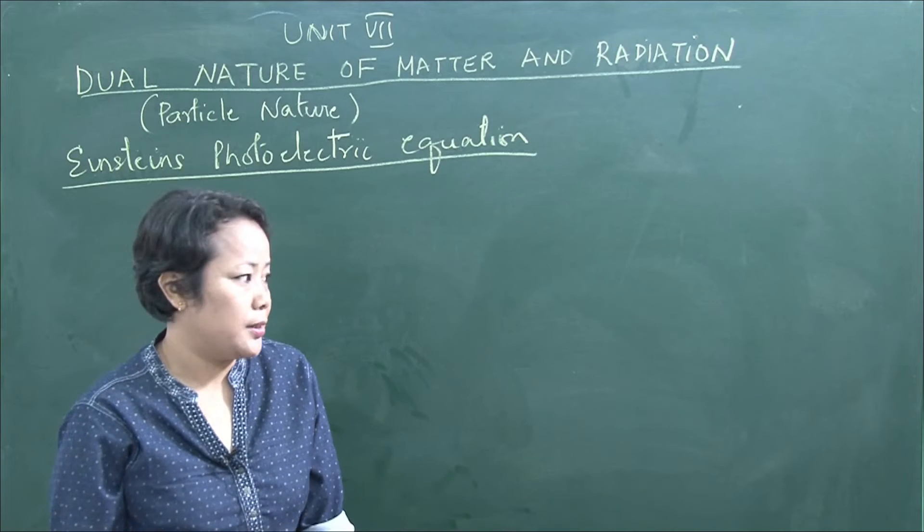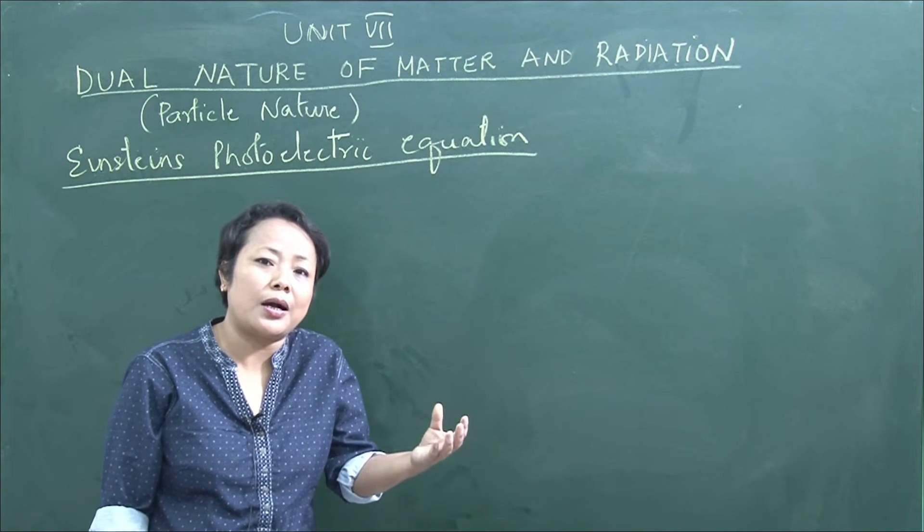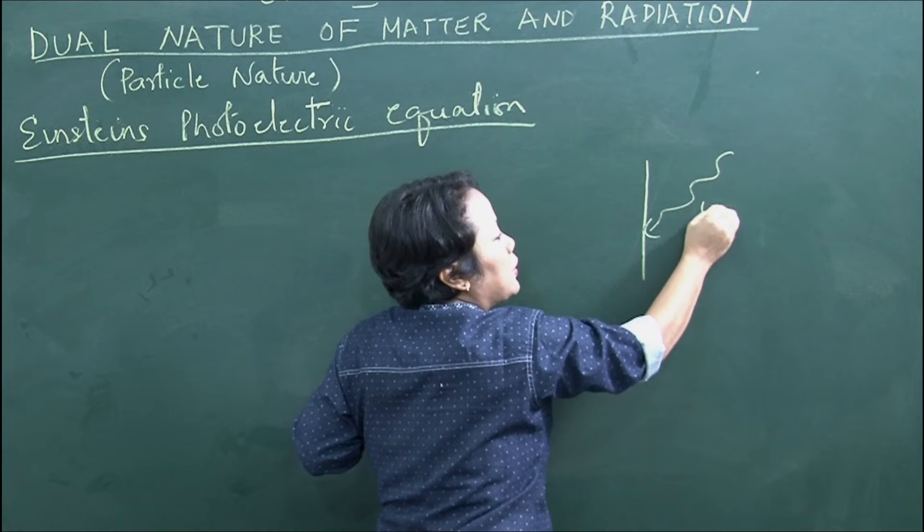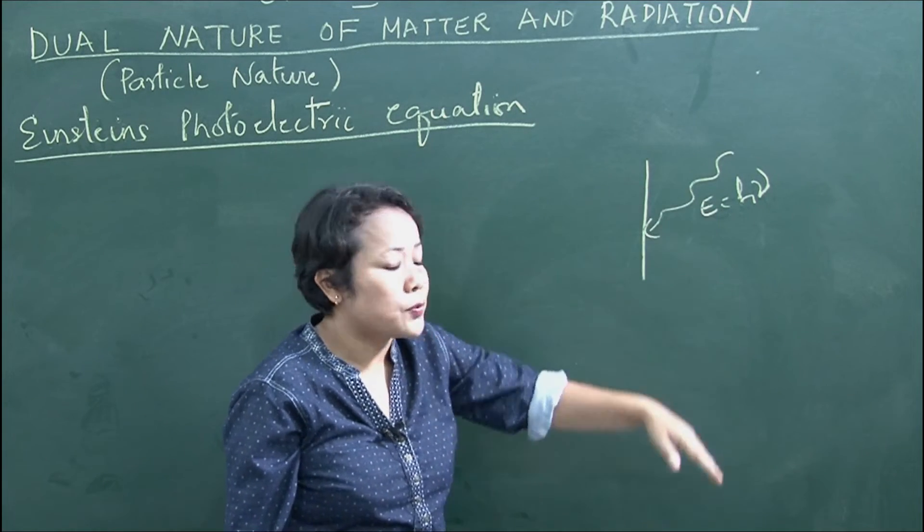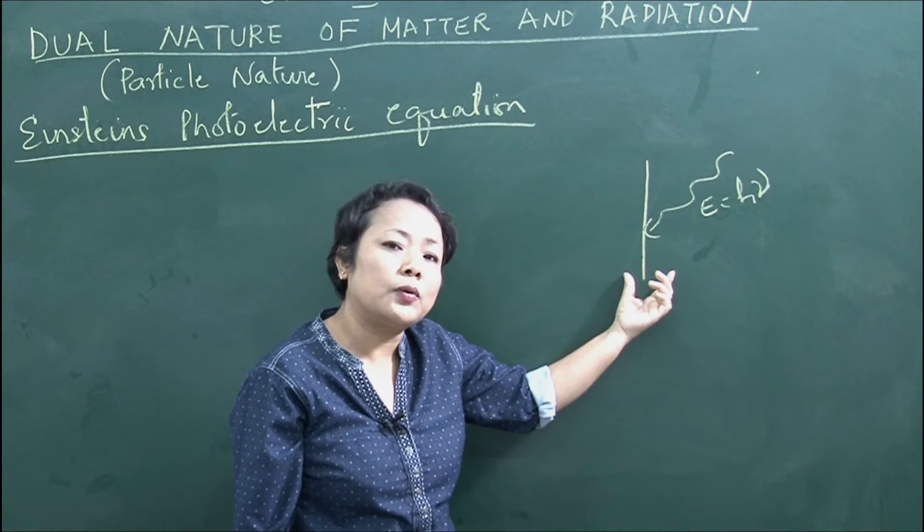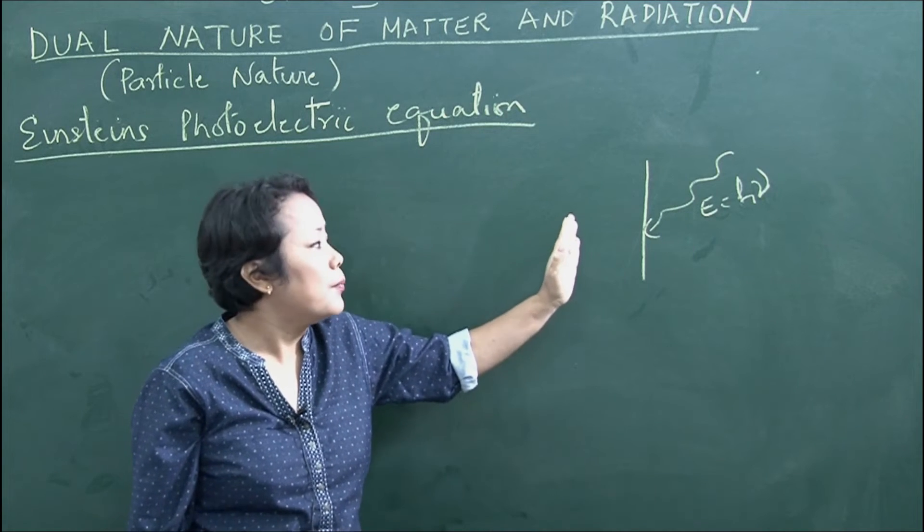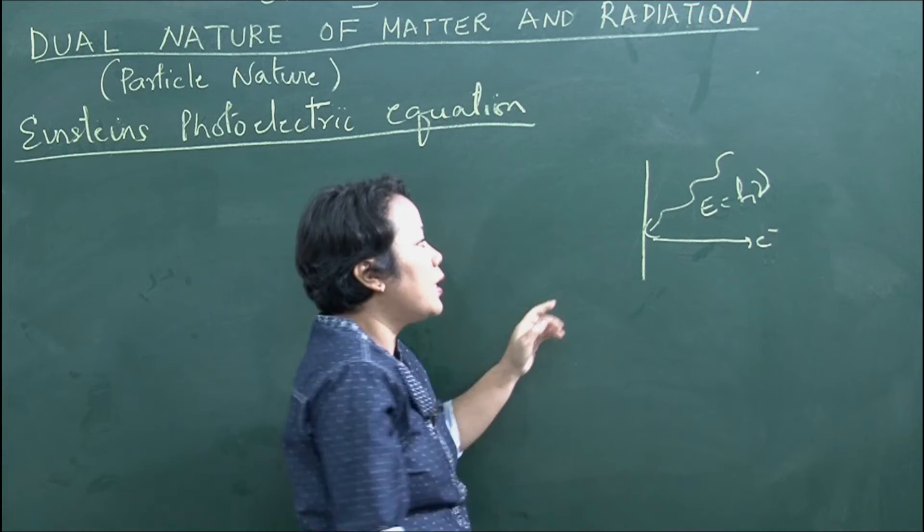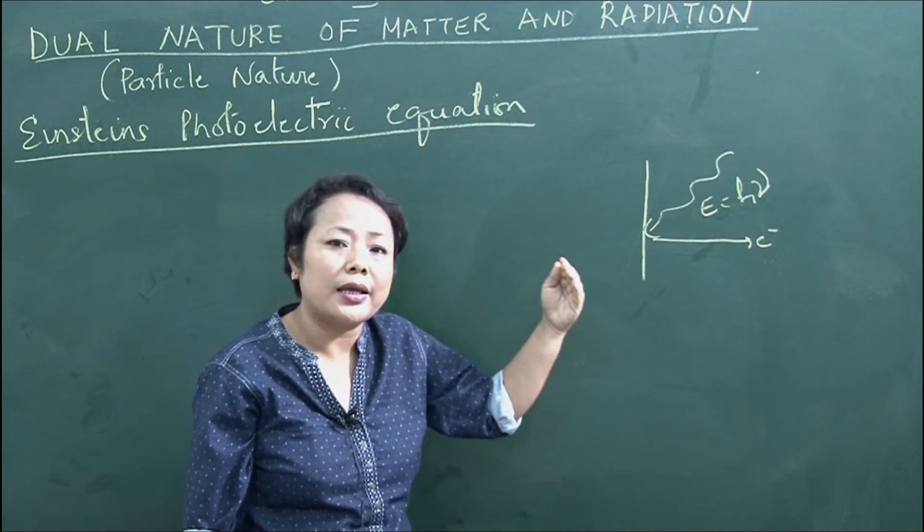Einstein's photoelectric equation: Einstein received the Nobel Prize for explaining the photoelectric effect. When light energy E equals h nu is incident on a metal surface, this energy is used in two ways according to Einstein's photoelectric equation.